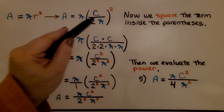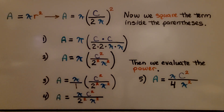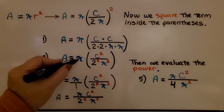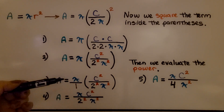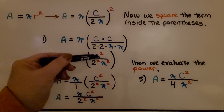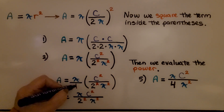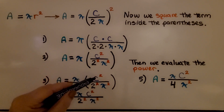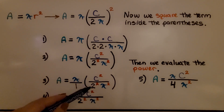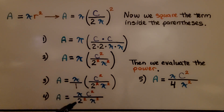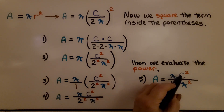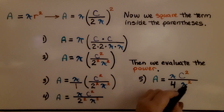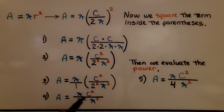Squaring the term inside the parentheses gives us C times C over 2 times 2 times π times π. So area equals π times C² divided by 2² times π². We can multiply straight across by putting a 1 underneath the π, giving us π times C² for the numerator and 2² times π² for the denominator. Then we evaluate the power: 2² equals 4, so area equals πC² divided by 4π².